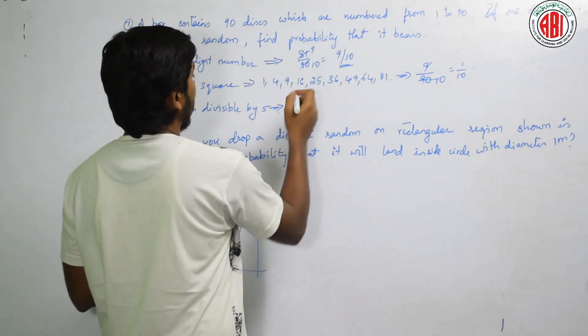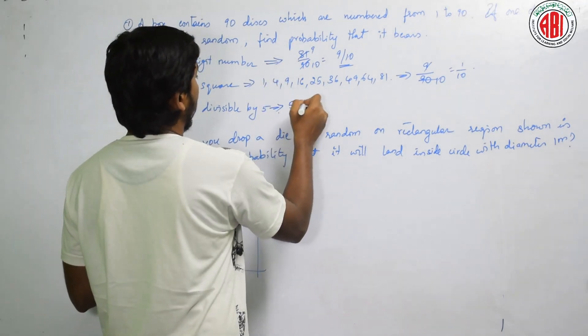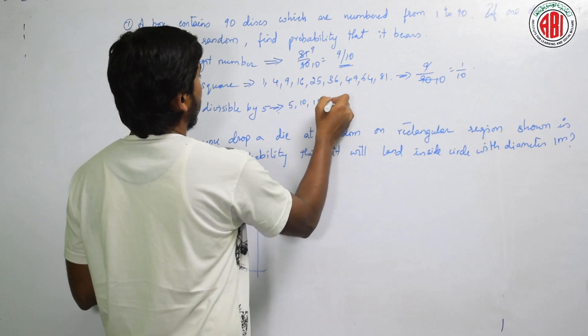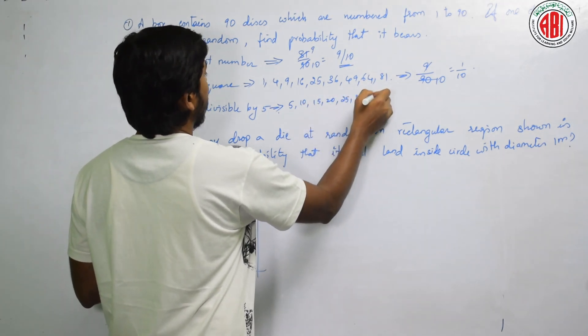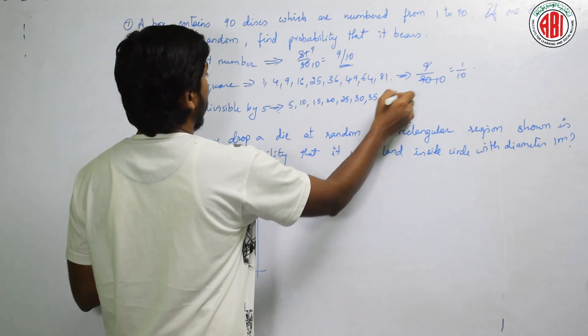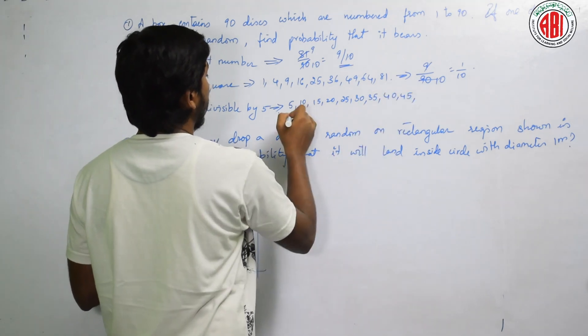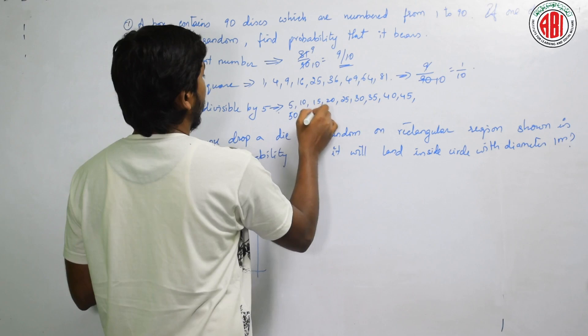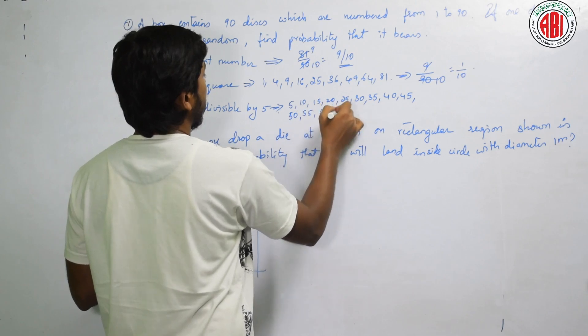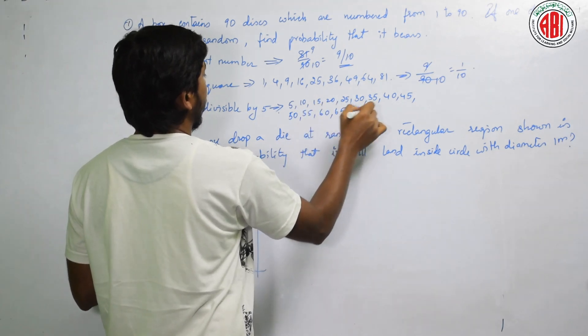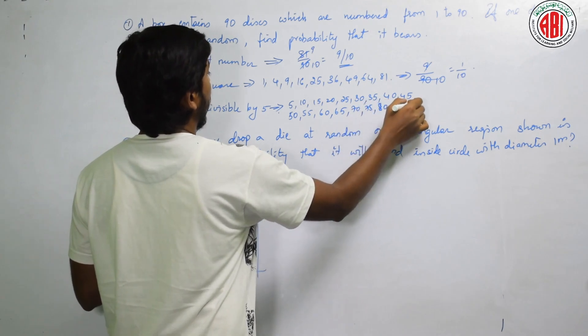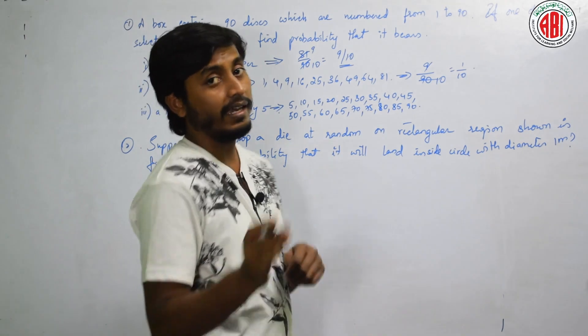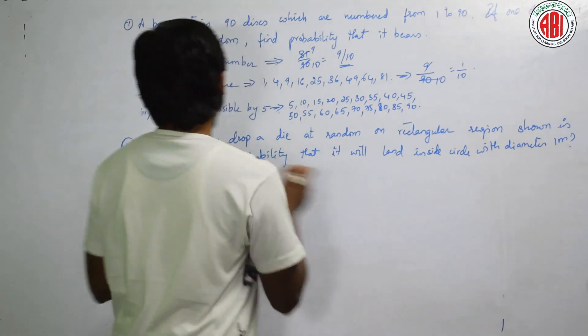What all are there? 90. 1 to 90 me: 5, 10, 15, 20, 25, 30, 35, 40, 45, 50, 55, 60, 65, 70, 75, 80, 85 and 90. One se 90 tak. Now just count how many numbers do you get?